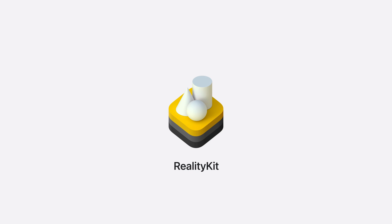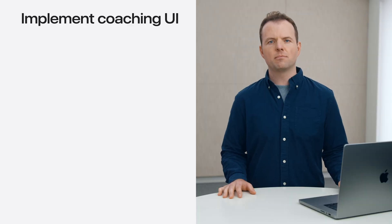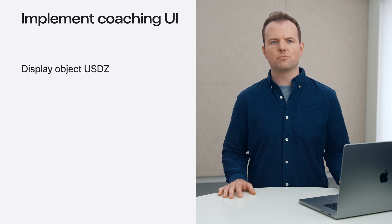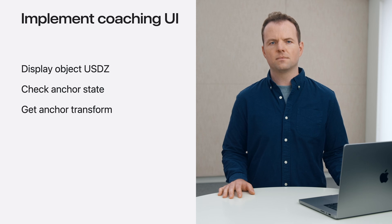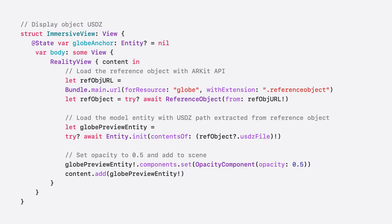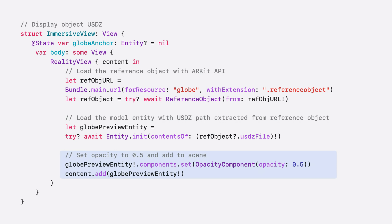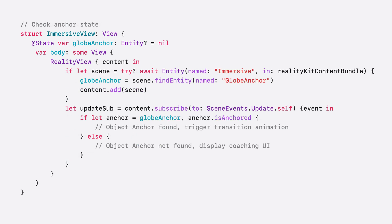The RealityKit API provides an extensive toolset to help me achieve all of this. To implement my coaching UI, I'll display a preview 3D model to help find the right object. My coaching UI should react to changes in the anchor state. This code sample shows how to display the 3D model of my target object: I retrieve it from the reference object file using the ARKit API, load the USDZ file like any other model entity, set its opacity to 50% to indicate it's a preview, and add it to my scene. Then, in the update loop, I check the entity's isAnchored state and decide what to display in both cases.